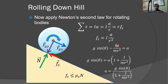Substituting into our earlier equation, replacing friction with IA over MR squared, we get a new expression for acceleration: A equals g sine theta divided by (1 plus I over MR squared). This only works when the wheel is rotating with the surface. If it's sliding, that term goes away and we just get g sine theta.